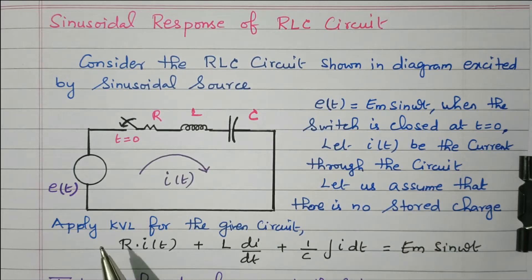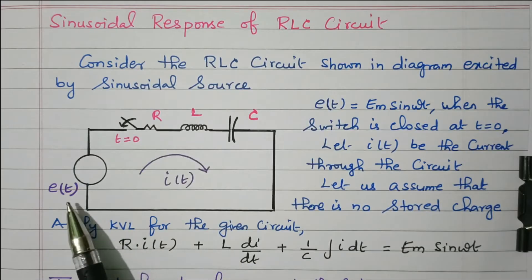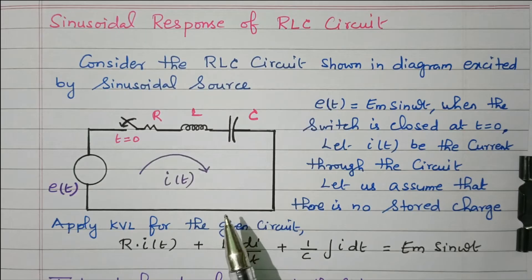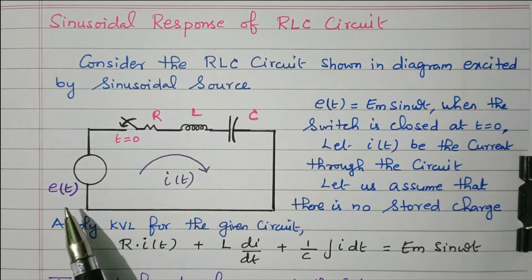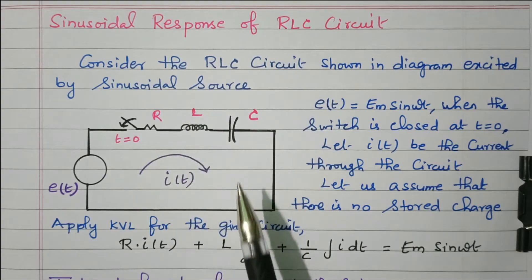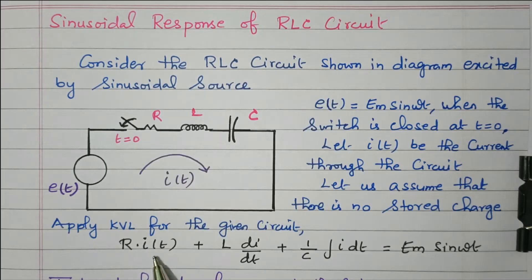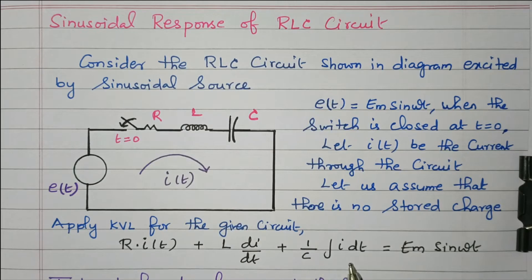Now we are going to apply Kirchhoff's Voltage Law for the given circuit. KVL states that the applied voltage Em sin(ωT) equals the voltage drop across the resistor, inductor, and capacitor. Voltage rise equals voltage drop. The voltage drop across R is R·I(T), across the inductor is L·dI/dT, across the capacitor is (1/C)·∫I dT, and that equals the applied voltage Em sin(ωT).